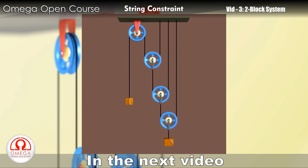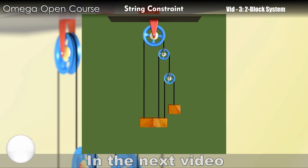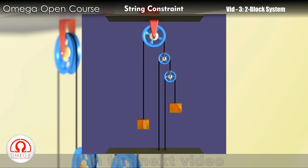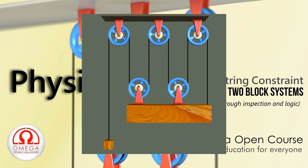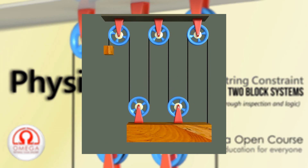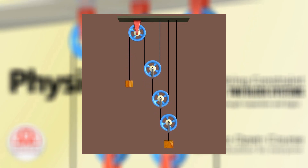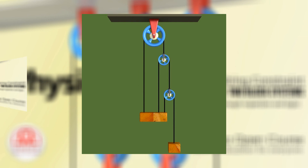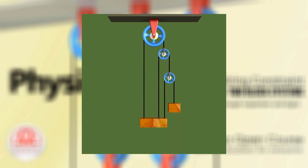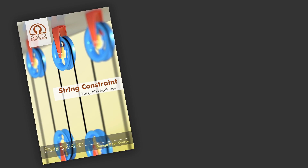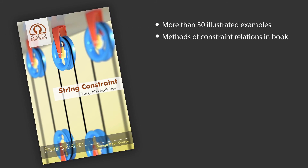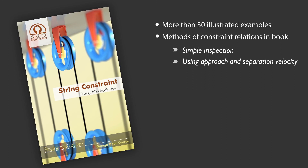I hope this video helps you understand constraint relation of two block systems with two strings. In the next video, we will discuss two block systems with three strings. String constraint cannot be learned properly unless you solve a large number of questions on it. Unfortunately, in the books available in the market, the questions of string constraint or motion constraint are scarce and scattered. To resolve this problem, we have prepared a mini-book which focuses entirely on string constraint and motion constraint. This book explains string constraint using several illustrated examples, and also explains different methods used to write constraint relations — like by inspection, through the concept of approach and separation velocity, using conservation of energy, and by writing constraint equations.